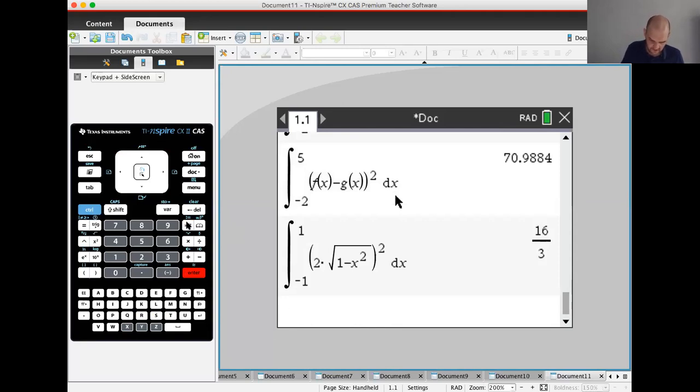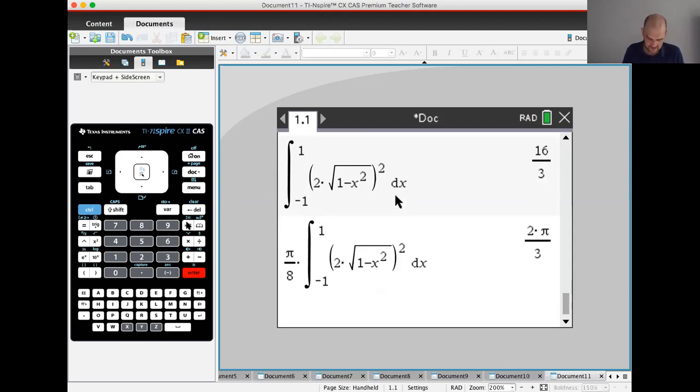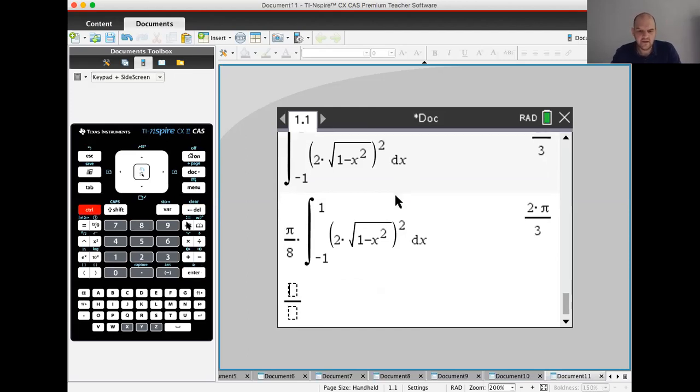So when we make our cross sections, and the cross sections are squares, we get 16 thirds, which means for the next one, we're going to get 16 thirds times pi over eight. And then we're going to get 16 thirds times root three over four. So you can do these, you know, you don't actually need a calculator at this point. But so this will be two pi over three, which is just pi over eight times 16 thirds.